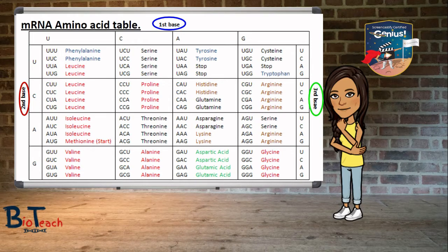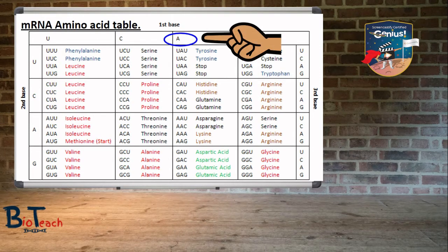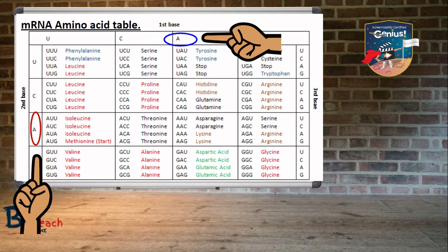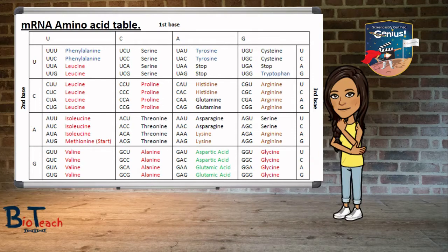It's probably better to use an example, so let's look at one now. Let's say the codon on our mRNA was AAA. The first base is A, the second base is also A, and the third base is also A. I've highlighted them in that green circle. Reading across to the left, I can identify that the amino acid corresponding to AAA is lysine. Let's do another one. If the first base is G, the second base is U, and the third base is C, then the amino acid from GUC is valine, circled in turquoise.